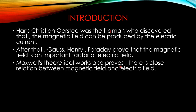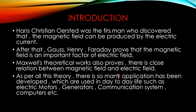Maxwell's theoretical work also proves there is a close relation between magnetic field and electric field. Maxwell, the scientist, provided his theory and proved that there is a particular relation between magnetic field and electric field. When current is passed through conducting materials, a magnetic field develops - this property of any material is called Electromagnetism. As long as current passes, magnetic field keeps developing; when current stops, the magnetic field also stops. This property is called the Electromagnetism property.